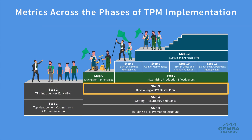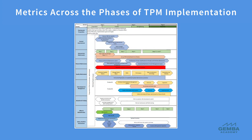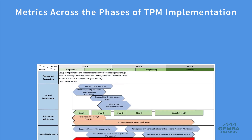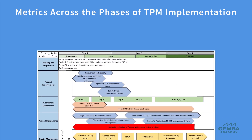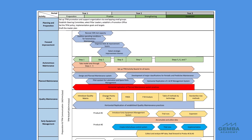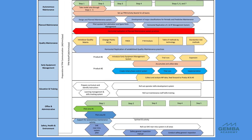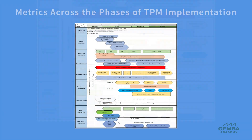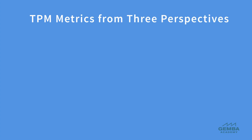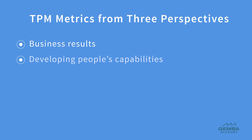In step five, we draft a TPM master plan based on an understanding of the business objectives and how the TPM metrics will help achieve them. It also requires aligning resources and setting priorities across the organization. Aligning TPM activities involves breaking the major goals down into sub-goals and selecting the approach, priorities, and strategies required to meet those goals. When setting targets and deciding how we keep track of the effectiveness of our TPM efforts, it's important that we do this from three perspectives to get the full picture. These are business results, developing people's capabilities, and intangibles.